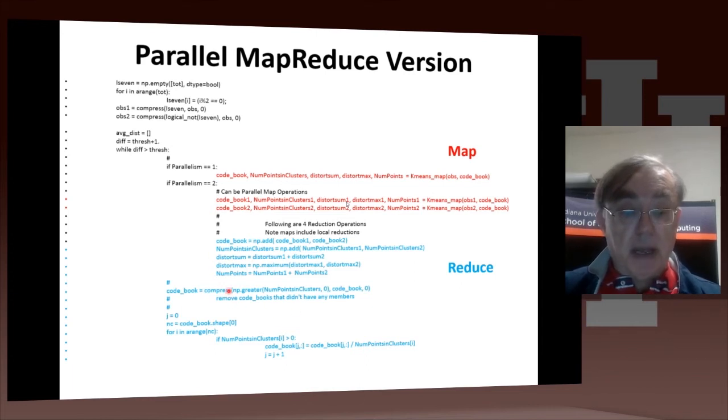Then we do the final arithmetic in the reduce process. This process involves getting rid of zero clusters and dividing the candidate centroids by the number of points, because the centroids are the average positions.